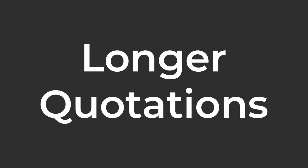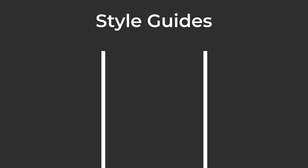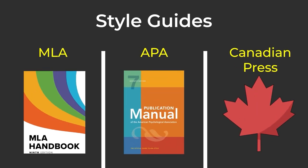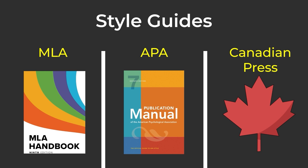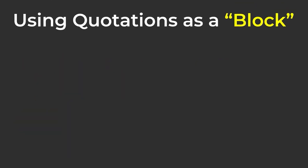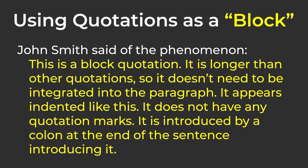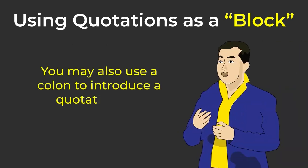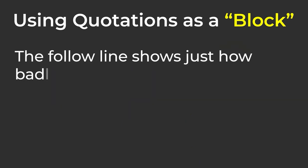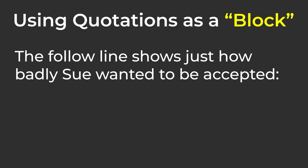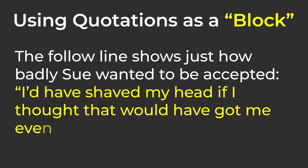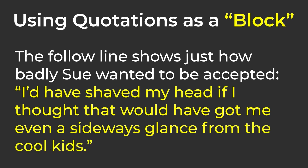For longer quotations, there are different methods depending on what you're writing, so follow the guidelines of the style guide you're using, such as MLA, APA, or the Canadian Press style guide. A popular way to include longer quotations is as a block: use a colon after the lead-in, then include the quote as its own indented paragraph without quotation marks. You may also use a colon to introduce a quotation in a sentence. Here's an example: "The following line shows just how badly Sue wanted to be accepted: 'I'd have shaved my head if I thought that would have got me even a sideways glance from the cool kids.'"